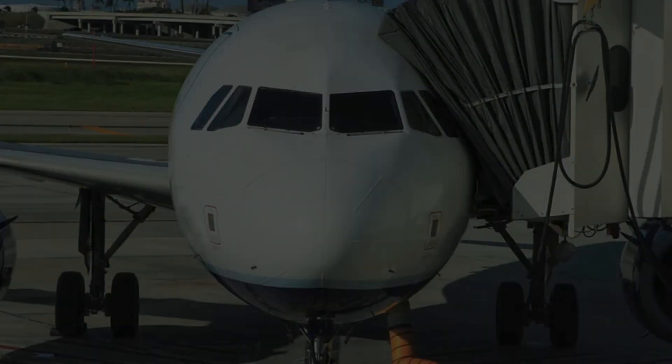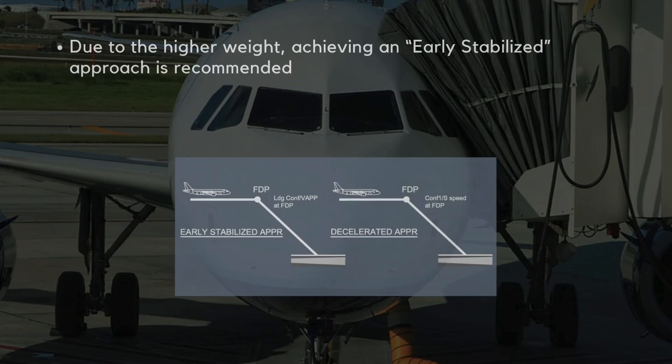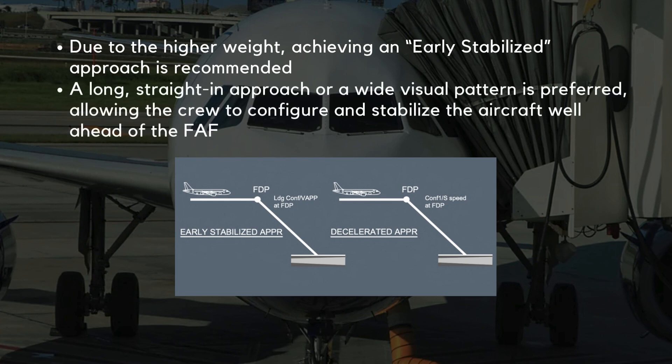Approach planning for an overweight landing involves a few unique factors. Due to the higher weight, achieving an early stabilized approach is recommended. A long, straight-in approach or a wide visual pattern is often the preferred setup, allowing the crew to configure and stabilize the aircraft well ahead of the final approach fix.